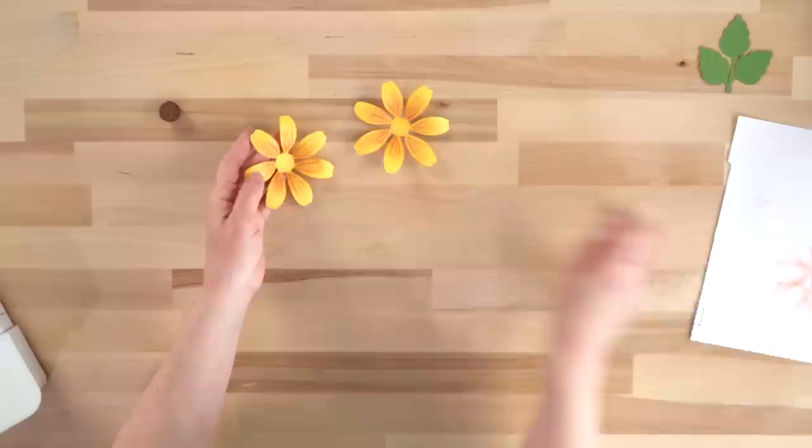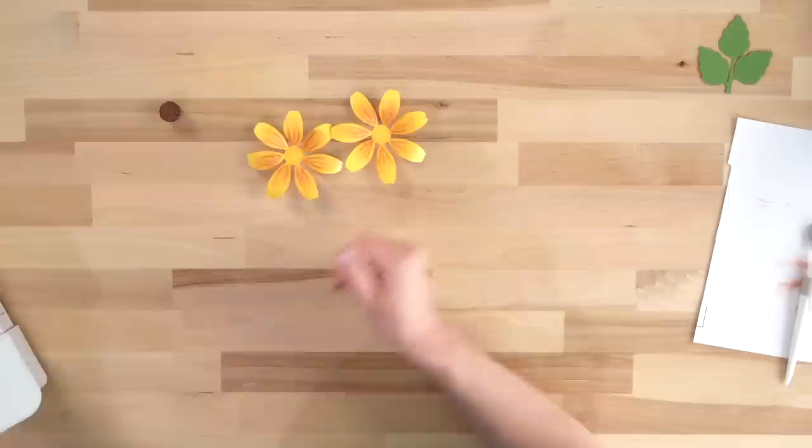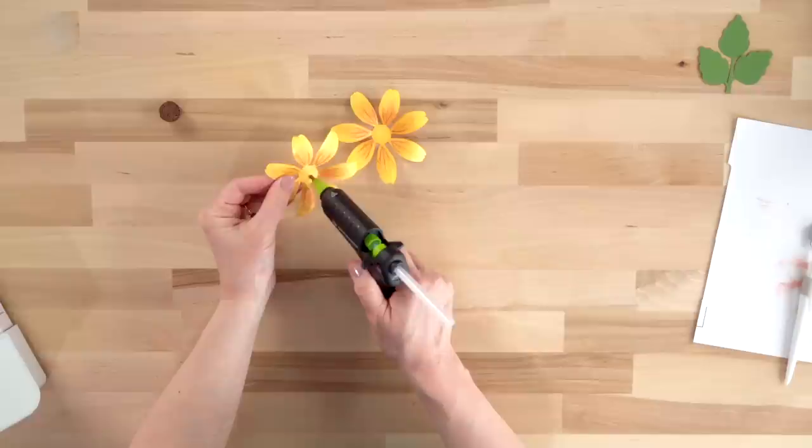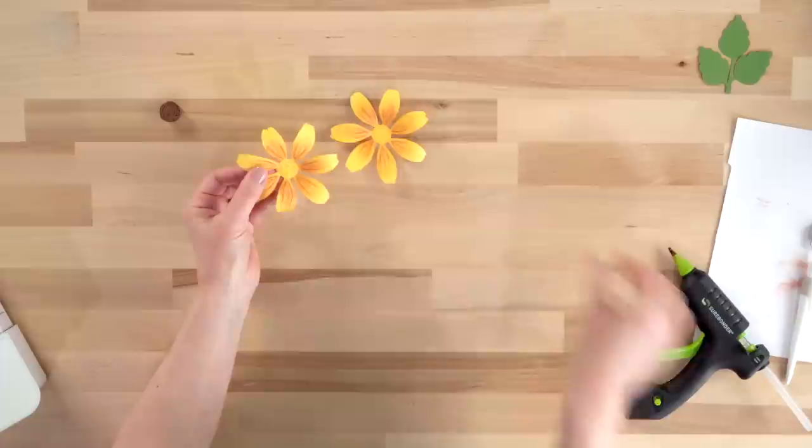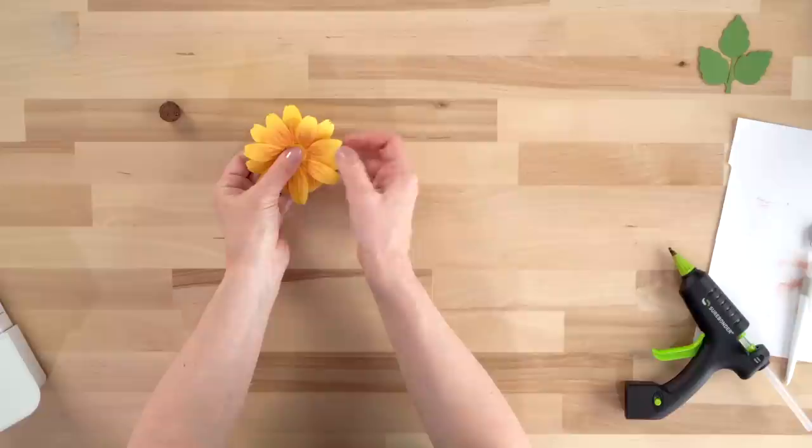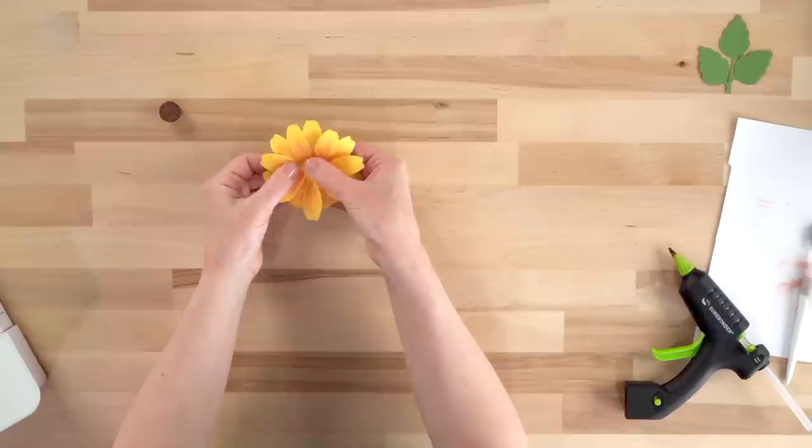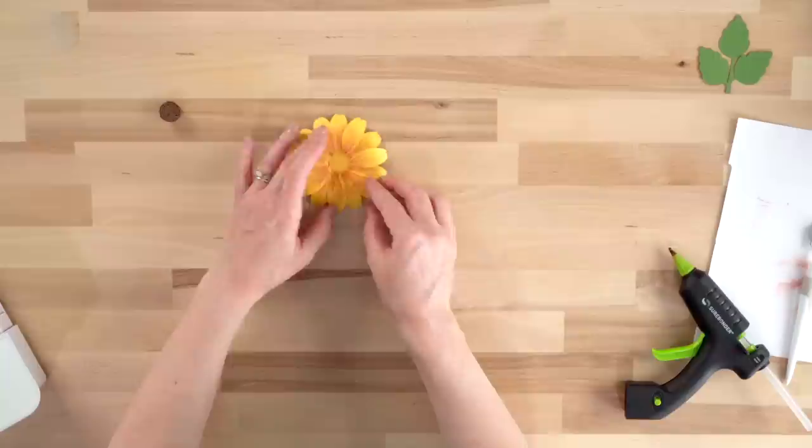Okay, and then once we've got those two layers, we'll just grab the hot glue gun again once we have those two layers and add some glue to one of them. Then you want to make sure as you're pressing these together that you kind of offset the petals so the layer behind is not evenly stacked up with the layer of petals in front of it. You want those to fill in the gaps behind there. Okay, so that is our petals.